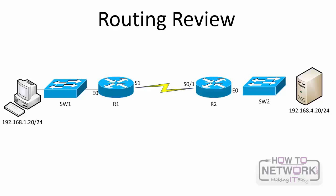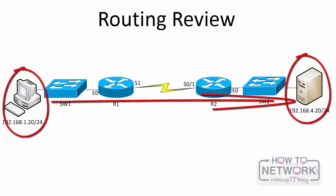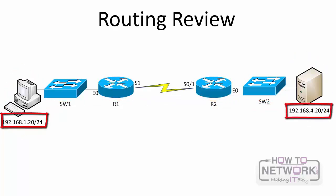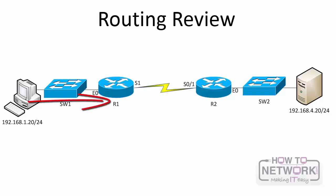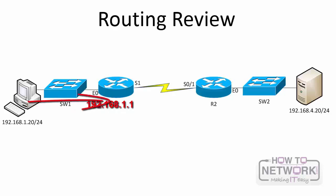A PC wants to send data to a server. First, the PC compares its IP address and subnet mask to the destination — it determines the destination is on a remote network and it cannot directly reach it. The PC needs the layer 2 address of the default gateway, so it sends an ARP request for router 1's MAC address and receives a response. The PC adds router 1's MAC address to its ARP cache and then sends the data in a frame destined for the server to the default gateway, using the matching layer 2 and layer 3 information.